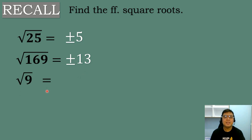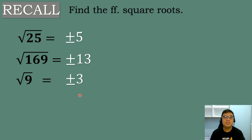Next: What is the square root of 9? Think of a number that when multiplied by itself, the answer is 9. That number is 3, because 3 times 3 is equal to 9. So the square root of 9 is positive or negative 3.